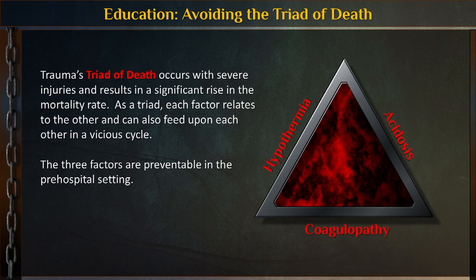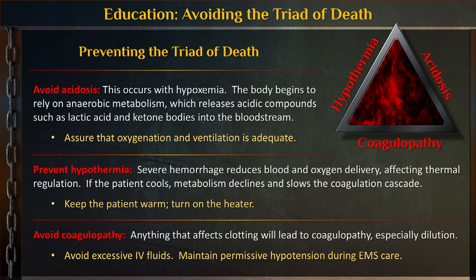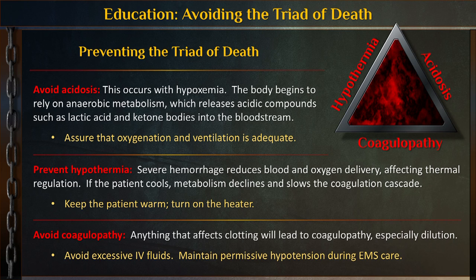To avoid acidosis: ensure good oxygenation and ventilation so we're not building lactic acids and ketones. To avoid hypothermia: keep trauma patients warm — turn the heater on in the truck even if it's 90 or 100 degrees outside. That's why trauma bays are kept hot. To avoid coagulopathy: avoid excessive fluid. Allow permissive hypotension — place large-bore IVs but don't aggressively push fluids. Large-bore IVs can flow 3,000 cc/hour, but if we start flooding them we'll dilute their H&H, as we already saw it drop significantly in this patient.